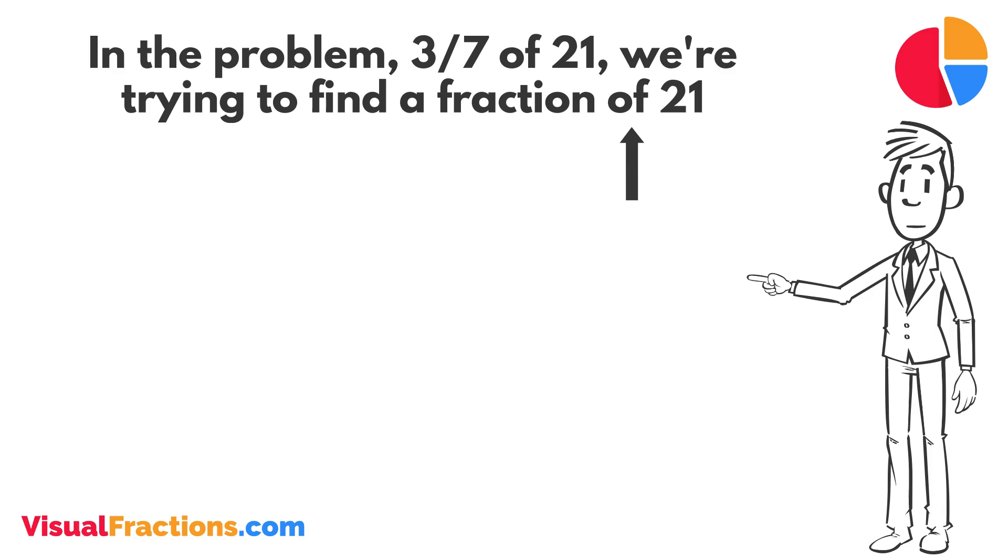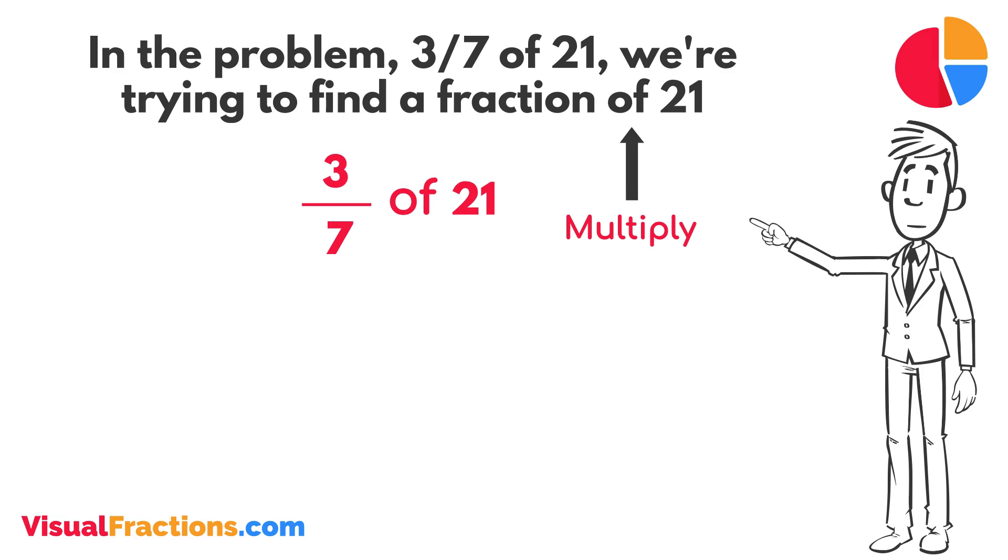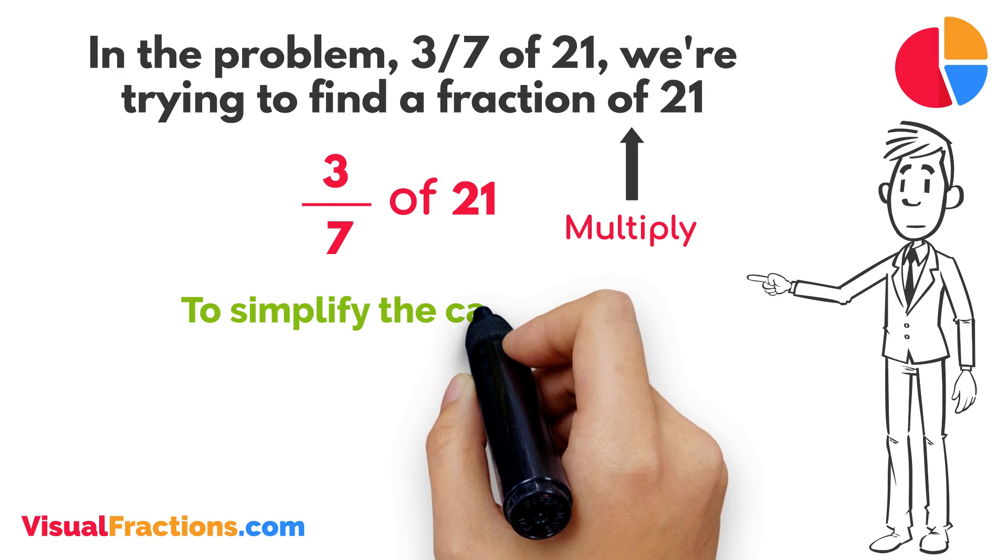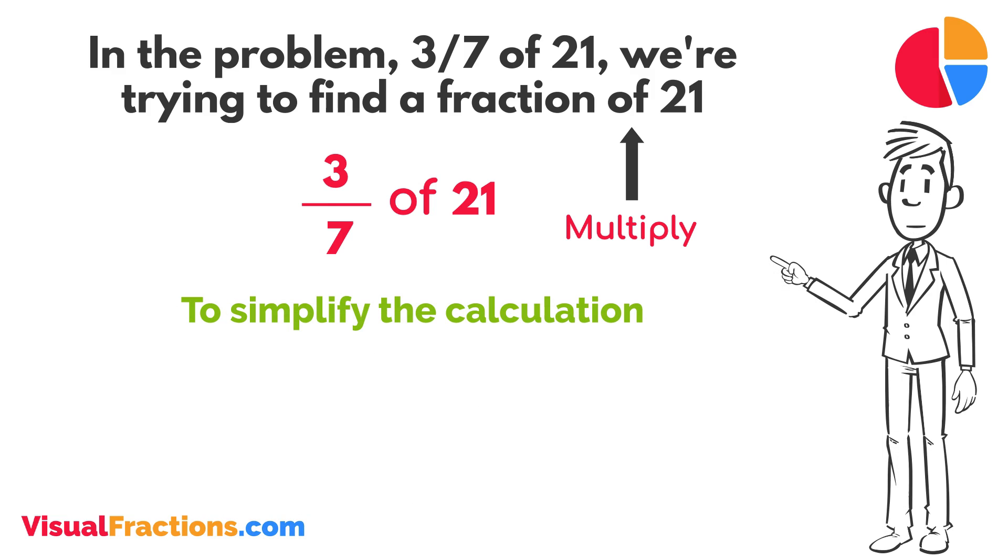The word 'of' in mathematics typically means to multiply, so we rewrite our problem as multiplication: 3/7 times 21. To simplify the calculation, we first convert our whole number into fraction form, writing 21 as 21 over 1. This transformation makes it easier to work with our numbers as fractions.